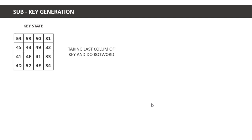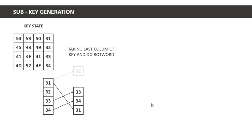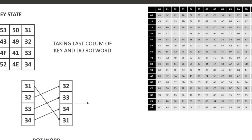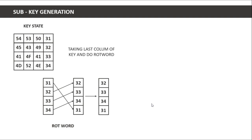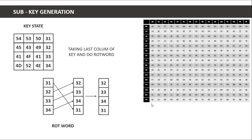To generate new sub-keys, we take the last column of the key state and apply rot word — this is the first step of sub-key generation. The rot word operation takes the last column, shifts it so that each byte moves down one position and the last byte wraps to the top. We then take this rot word column and apply sub byte.